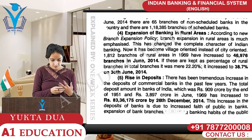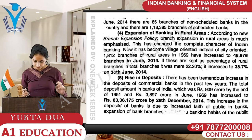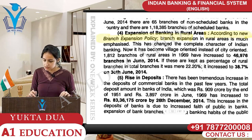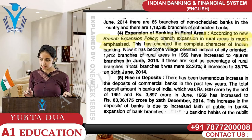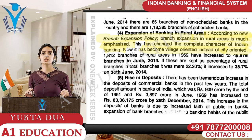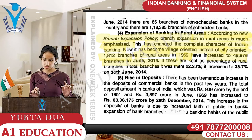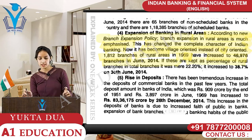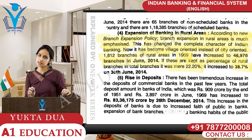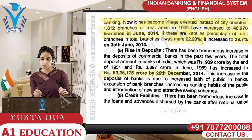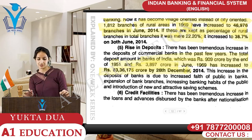Then comes expansion of banking in rural areas. According to the new branch expansion policy, branch expansion in rural areas is much emphasized. This has changed the complete character of Indian banking - it has become village oriented instead of city oriented. There were 1,812 branches in rural areas in 1969, but this has now increased to 46,976 branches as of June 2014. As a percentage of rural branches, there has been an increase from 22.2% to 38.7%.